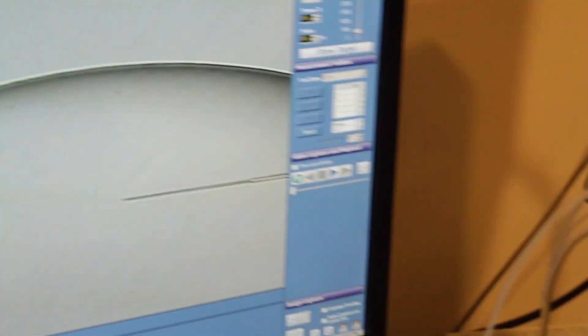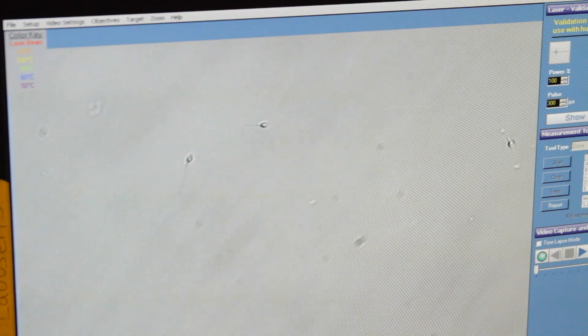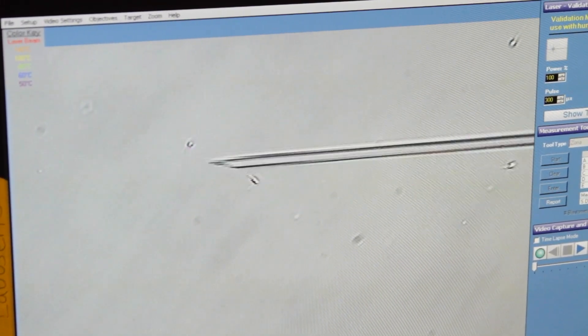The sperm are placed into a viscous solution called polyvinylpyrrolidone, or PVP. That slows them down. It serves two purposes: it slows the sperm down so we can catch them, and it makes it easier to control the fluid because it's viscous, so we're using suction to control the injection.